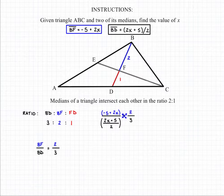From here we can cross multiply, which gives us 2 times (2x + 5)/2 being equal to 3 times (-5 + 2x).